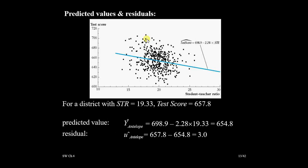Now, if for example we have a district having test score 657.8 and class size 19.33, around here. You see, observed value is 19.33 and 657.8.